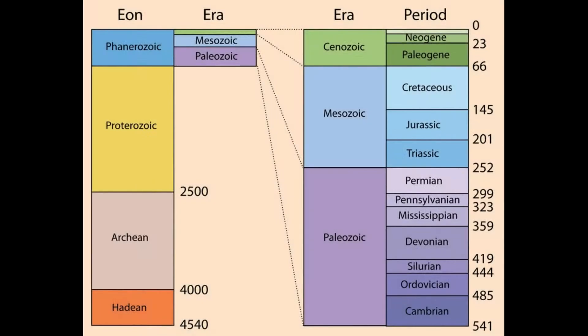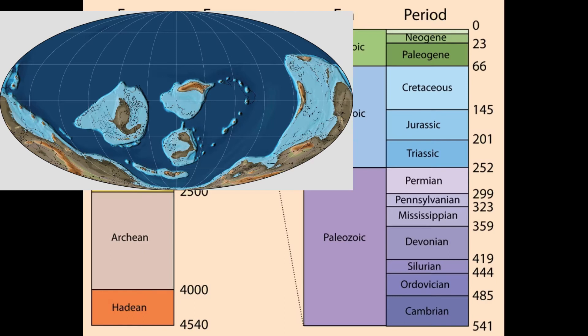Greenhouse conditions are favored by continental rifting and collision. Scientists show that during the Permo-Carboniferous and late Cenozoic glaciations there were low levels of atmospheric CO2, whereas the Mesozoic and early Cenozoic warm intervals were associated with high CO2 levels from extensive volcanism. However, there are exceptions — the Ordovician glaciation occurred when atmospheric CO2 was about 10 times higher than today.